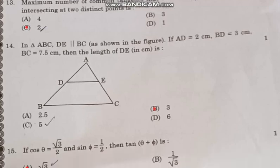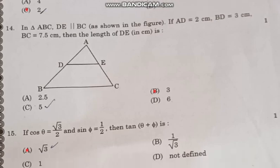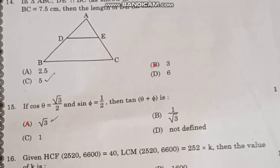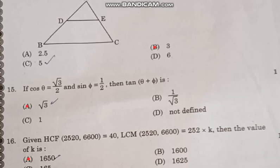Question number 14: In triangle ABC, DE is parallel to BC as shown in the figure. If AD equals 2 centimeters, BD equals 3 centimeters, BC equals 7.5 centimeters, then the length of DE is correct answer option B, 3.